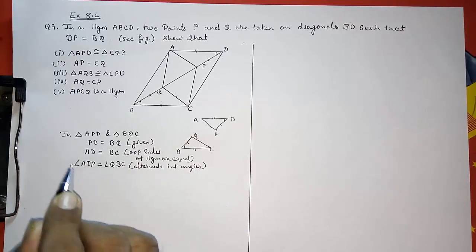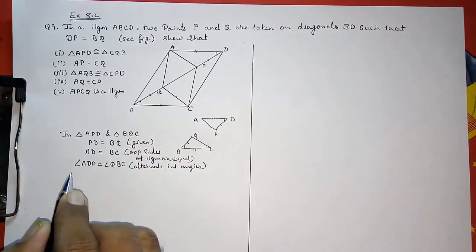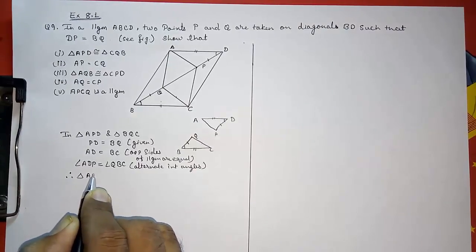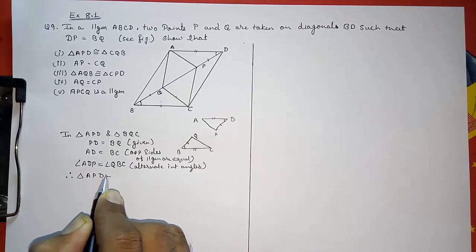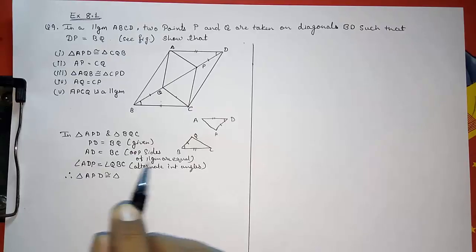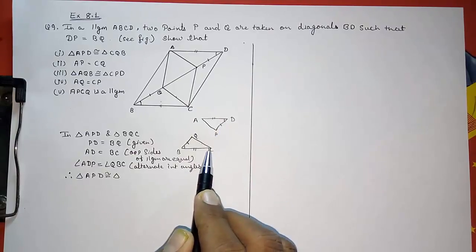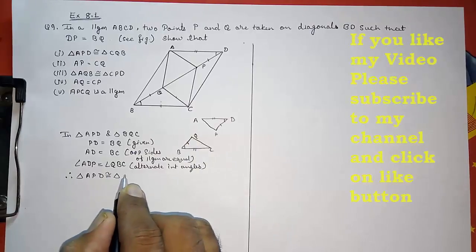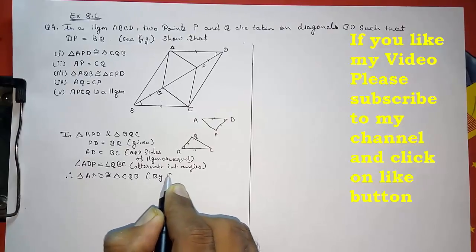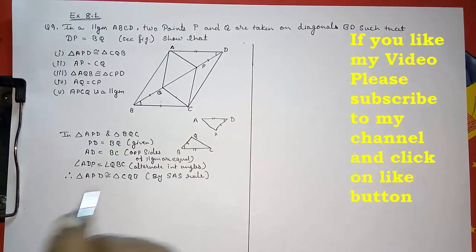By these three things — Side Angle Side — these two triangles are congruent. Therefore triangle APD is congruent to triangle CQB by the Side Angle Side rule.